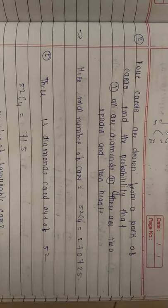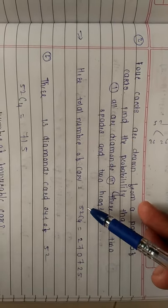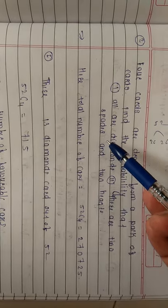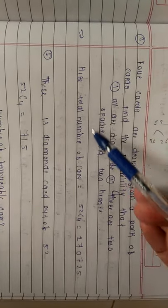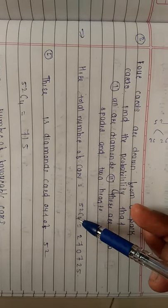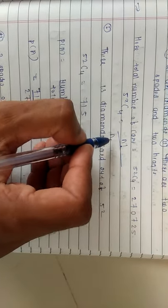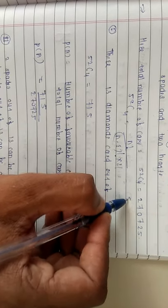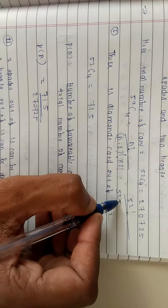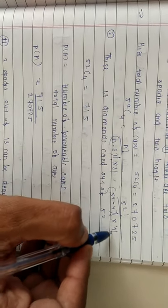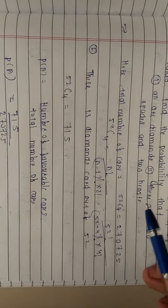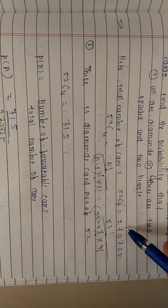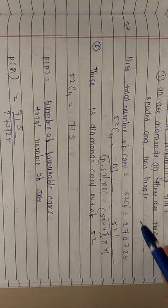First, we need to find the total number of cases. There are total 52 cards, and out of those 52 cards we have to draw 4 cards. That is calculated as 52C4, using the formula: n factorial divided by (n minus r) factorial into r factorial. So it is 52 factorial divided by (52 minus 4) factorial into 4 factorial. Calculating this, you get 270,725. This is the total number of cases.